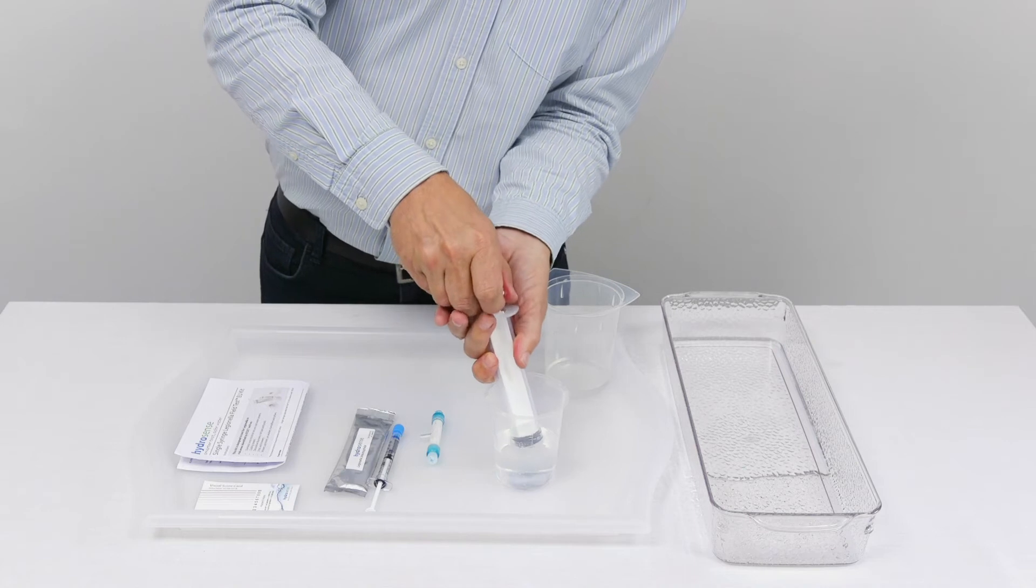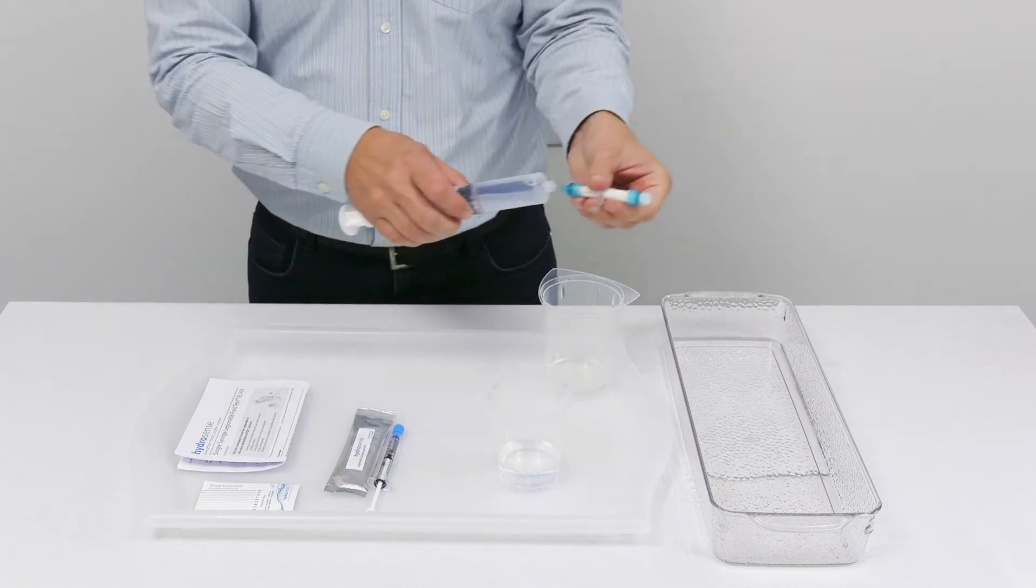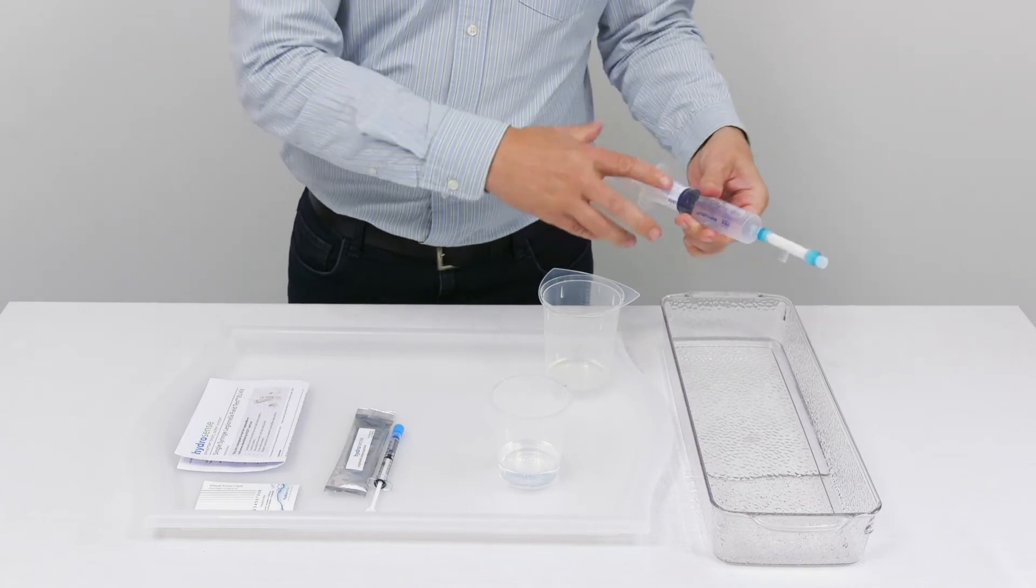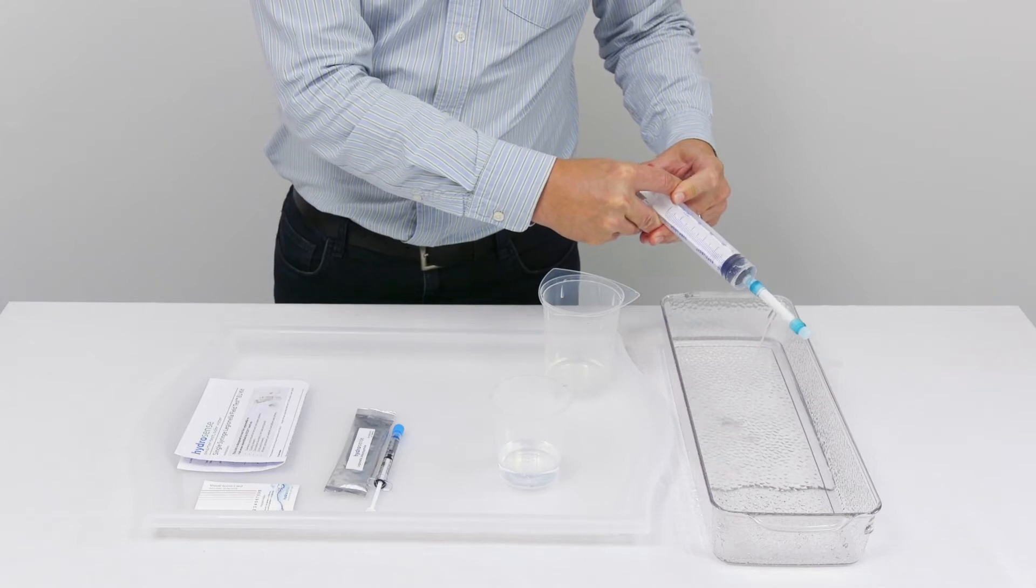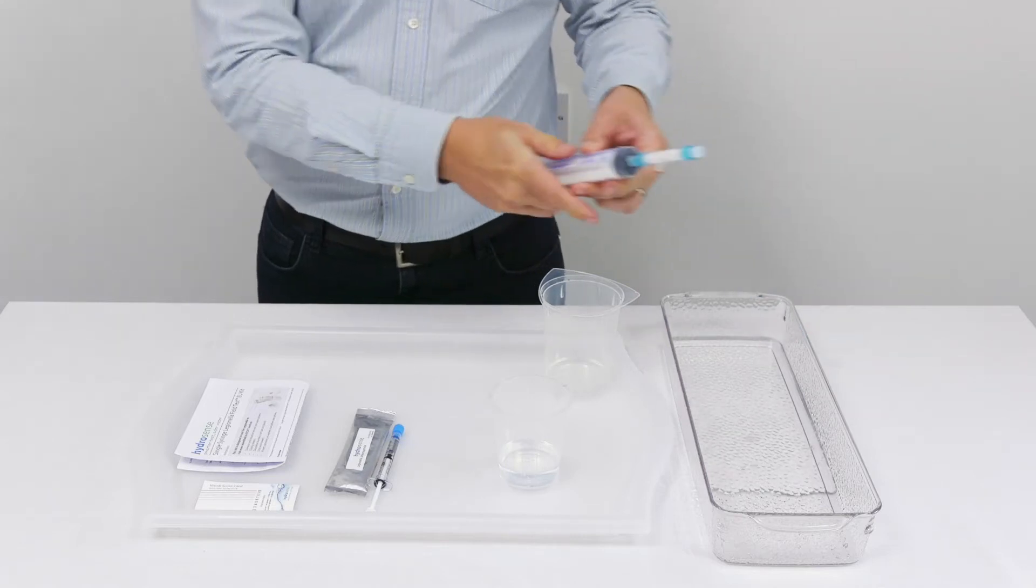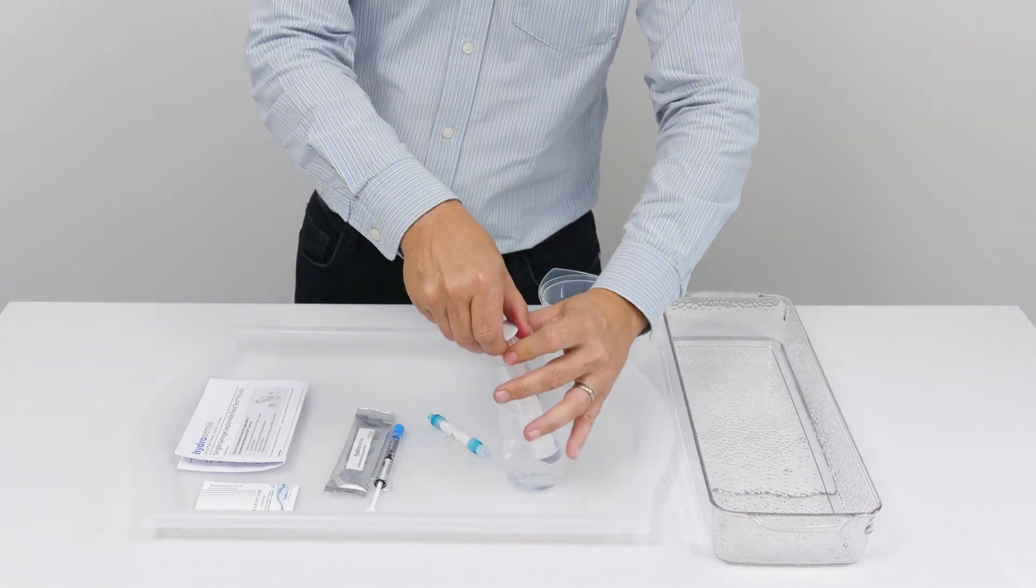Then we draw up the sample and attach it to the filter and pass the water through the filter. What we're doing at this point is concentrating any Legionella bacteria that are present in the water sample within the hollow fibers of the filter.